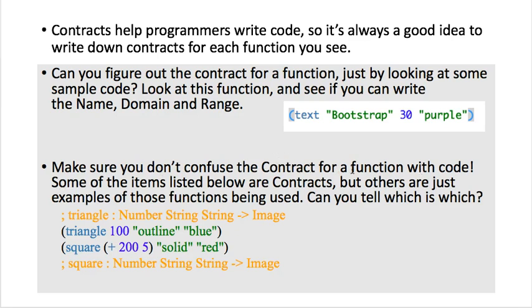Make sure you don't confuse the contract for a function with code. Let's look at these examples below. This line starts with the comment and doesn't have any parentheses, so it's a contract. Here's the name, here's the domain, and here's the range of the function. The next line is clearly not a contract, that is code. It starts with parentheses, has a function name, several arguments and close parentheses. So that's a racket expression. The last line is a contract with a function name, the domain, and the range, starting with a semicolon.